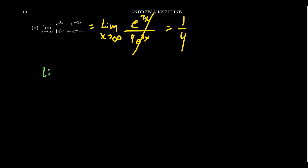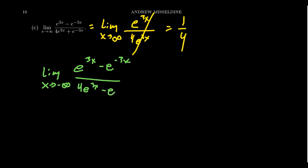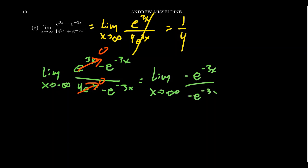On the other hand, taking the limit as x approaches negative infinity, the opposite happens. Now the e to the 3x terms go to zero, while the e to the negative 3x terms dominate because negative infinity times negative 3 gives a positive power of e. The dominant terms give negative e to the negative 3x over negative e to the negative 3x, everything cancels, and the limit turns out to be positive 1 — different from the one-fourth going to positive infinity. So be very careful with exponentials: look for dominant terms and always pay attention to whether you're going toward positive or negative infinity.